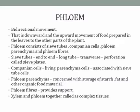Companion cells are living parenchyma cells associated with and functioning alongside the sieve tube cells. Phloem parenchyma are concerned with the storage of starch, fat, and other organic food material. Phloem fibers are dead sclerenchyma cells that provide support to the plant. Xylem and phloem together are called complex tissues.